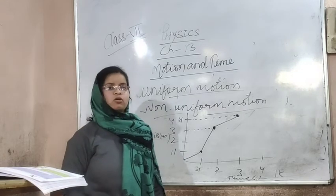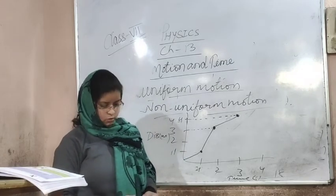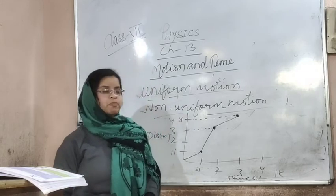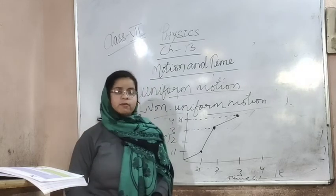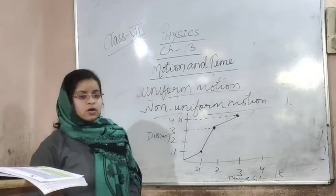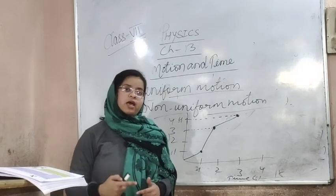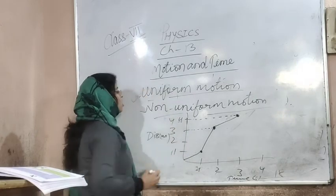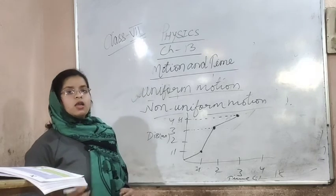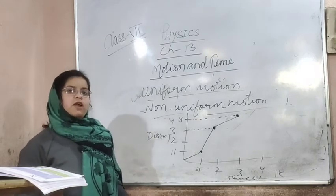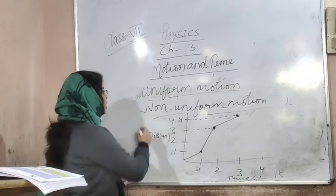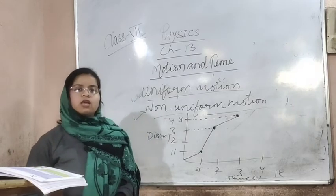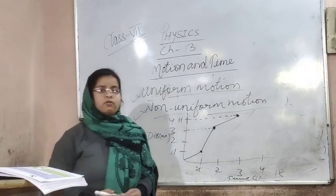This is what we call non-uniform motion. In uniform motion, when a body travels equal distance in equal interval of time, it is uniform motion. When a body travels unequal distance in equal interval of time, it is non-uniform motion. This is uniform motion and non-uniform motion.